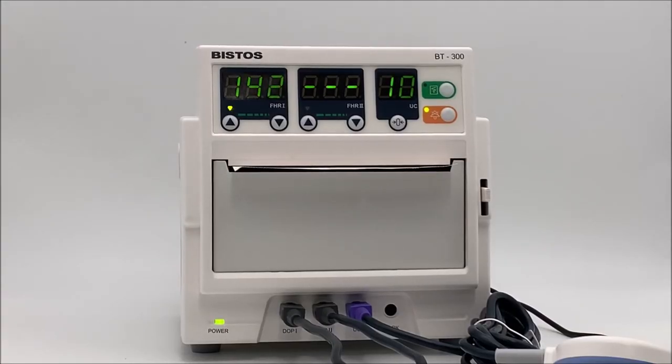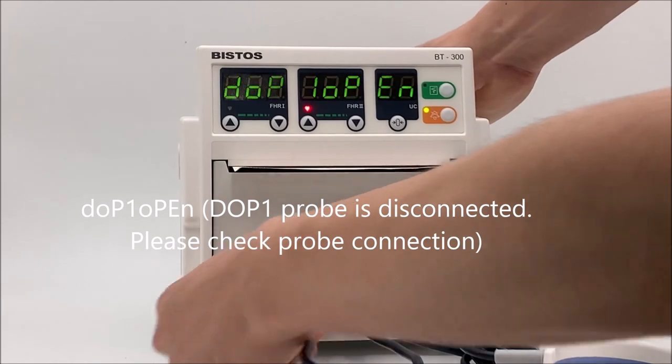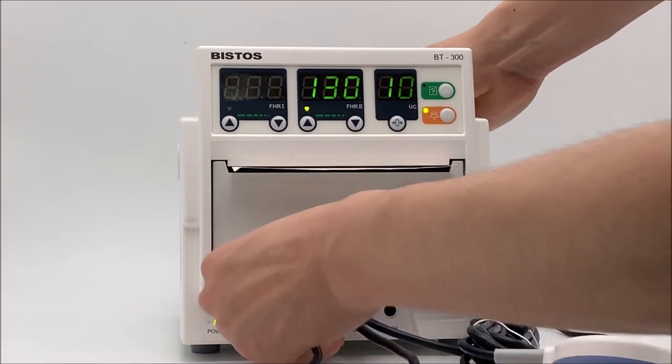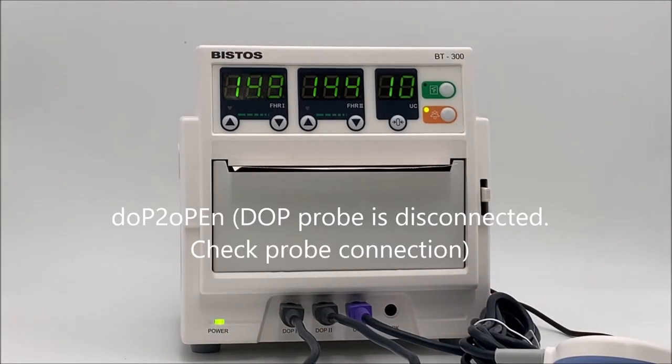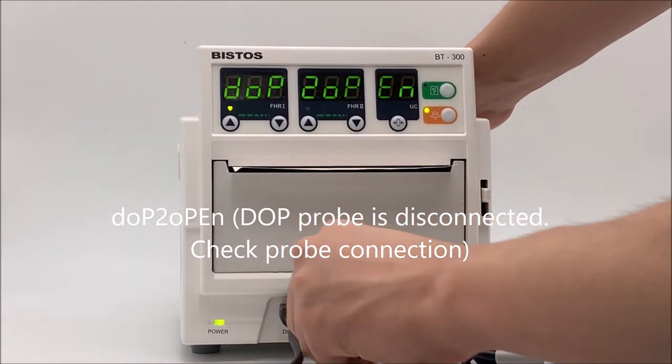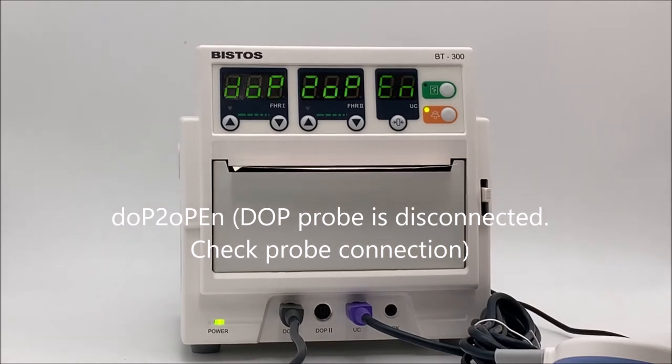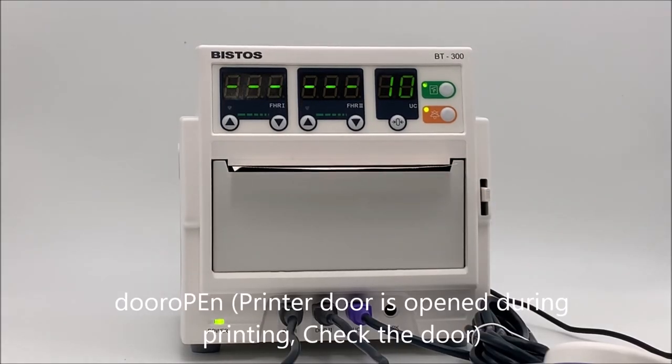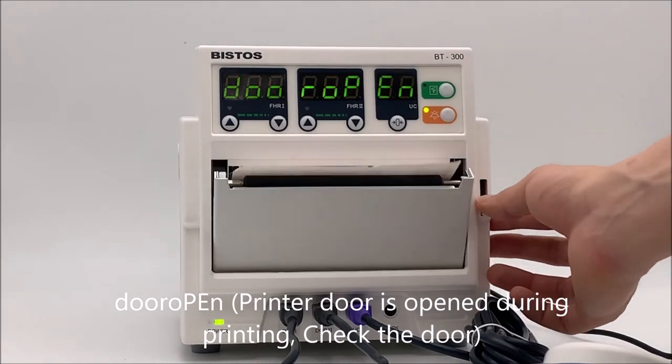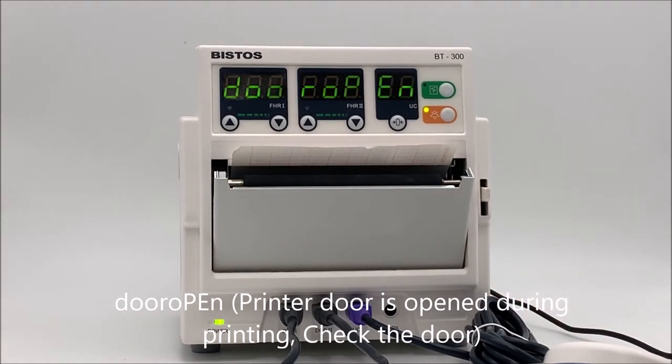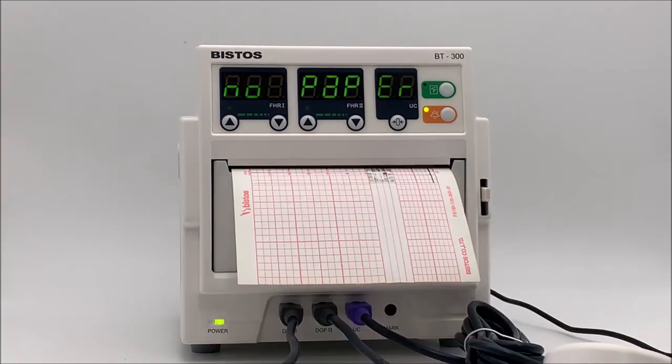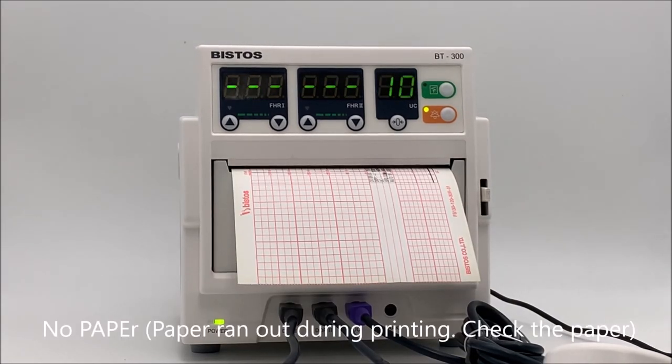Alarm message explanation. Doppler probe-1 is disconnected. Please check probe connection. Doppler probe-2 is disconnected. Please check probe connection. Printer door is opened during printing. Please check the door. Paper ran out during printing. Please check the paper.